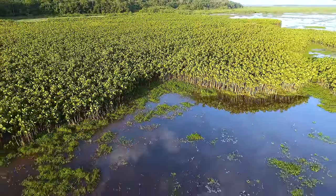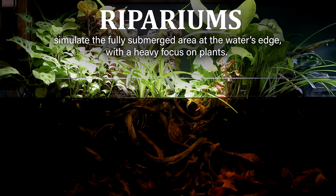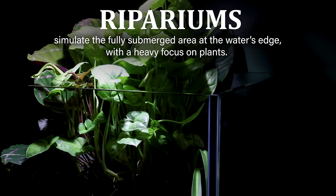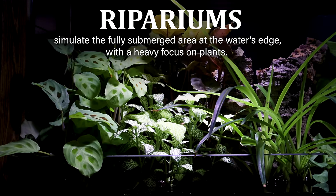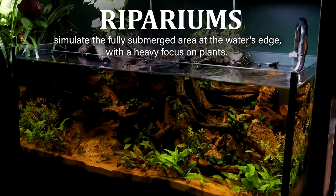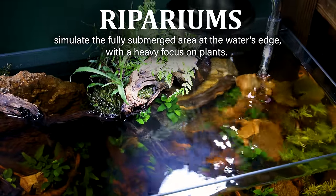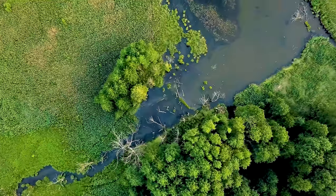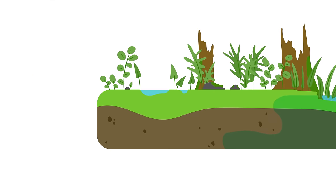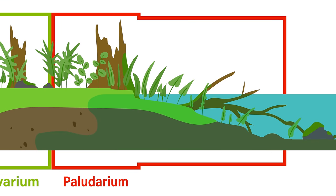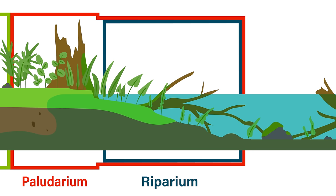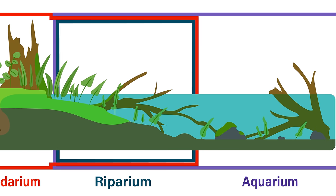In nature, transitional environments full of vegetation adjoining bodies of water are called riparian zones. Therefore the plants growing here can be called riparian or marginal plants. Paludariums are designed to mimic the transitional area between land and water to accommodate the types of animals found within them. A riparium mimics the area at the water's edge with a heavy focus on riparian plants. Although it may include driftwood or other minor elements above the water, all of the land must remain under the surface. Essentially they're an aquarium emphasizing above-water vegetation.